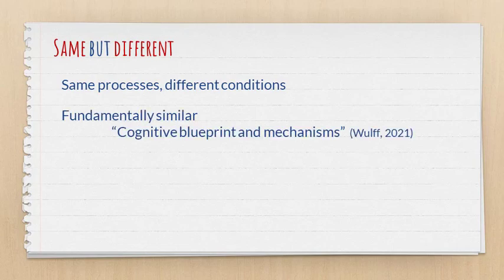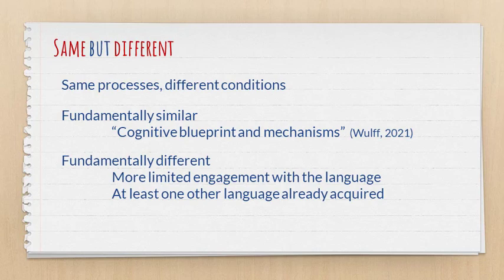Some scholars claim that L1 and L2 acquisition are fundamentally similar when it comes to the cognitive blueprint and mechanisms — the process of acquiring language, the role of input, the role of output, and so on. All of that is the same and doesn't change from L1 to L2 to L3. But at the same time, they're fundamentally different because there's more limited engagement with the language, perhaps less access to input, less access to opportunities to use the language. And the biggest difference of all is that there is at least one other language already acquired — a linguistic system already in place — which is not the case with monolingual first language acquisition.